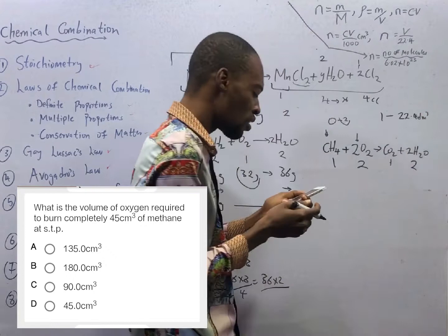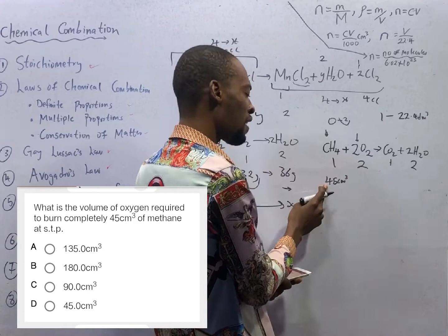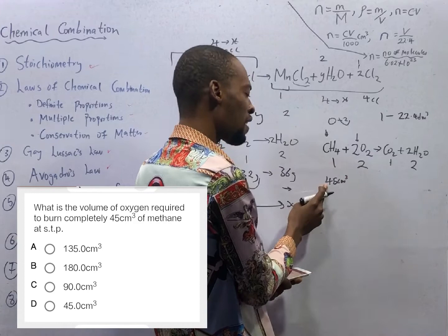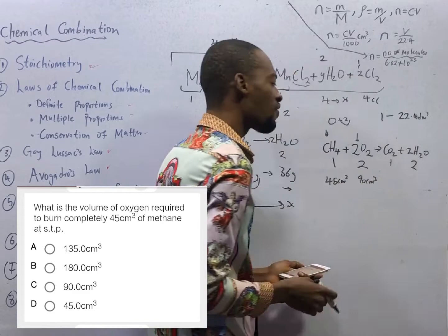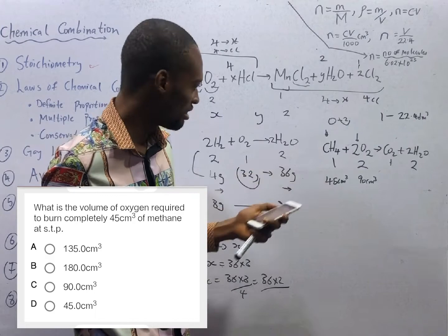The ratio is 1:2. If 1 is 45 cm³, 2 should be 90. So here is 90 cm³. It therefore implies that we need 90 cm³ of oxygen to burn 45 cm³ of methane completely. That is the answer — just the way we have been doing stoichiometry. They have given you the equation, so use it directly.